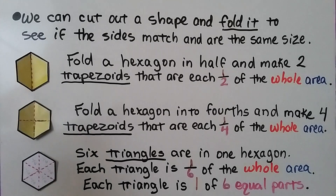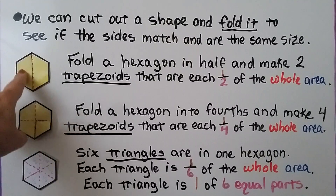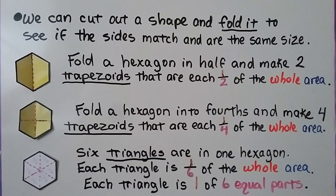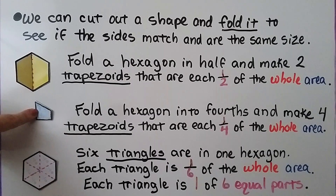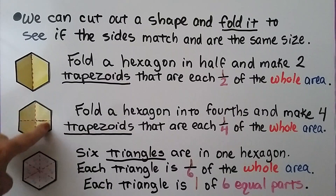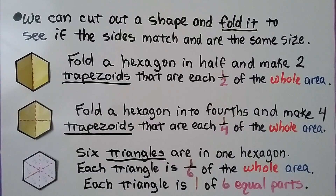We can cut out a shape and fold it to see if the sides match and are the same size. Here we have a hexagon — I just folded it and made two trapezoids that are each half of the whole area. If we fold a hexagon into fourths — fold it in half, then in half again — we make four trapezoids that are each one-fourth of the whole area. There are also six triangles in one hexagon. Each triangle is one-sixth of the whole area, or one of six equal parts.